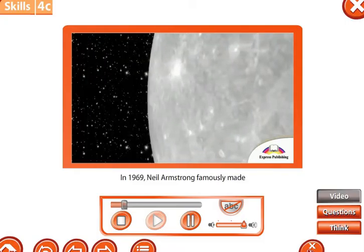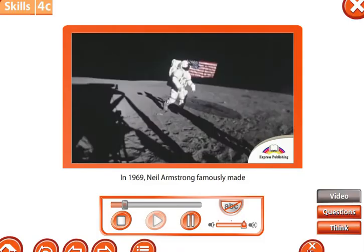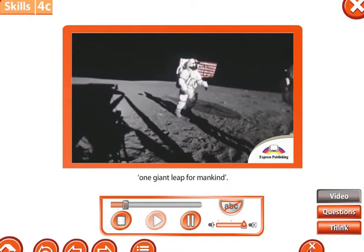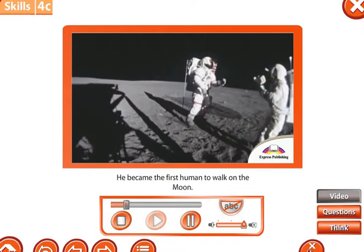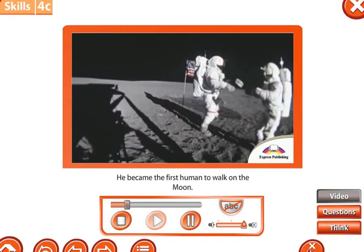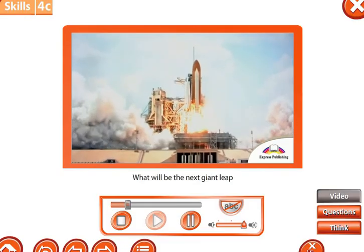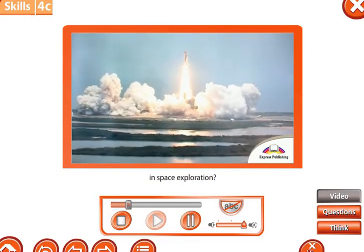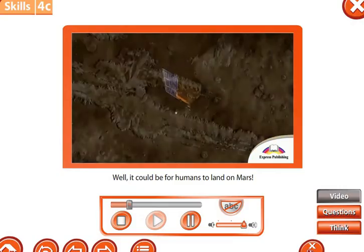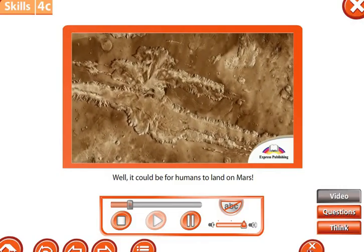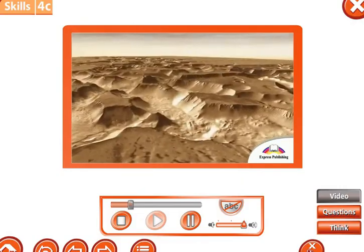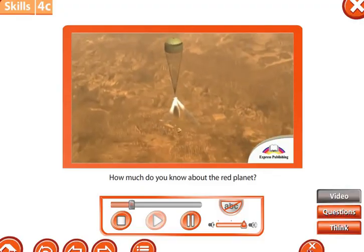This was because its red color reminded them of blood and their own god of war. In 1969, Neil Armstrong famously made one giant leap for mankind. He became the first human to walk on the moon. What will be the next giant leap in space exploration? Well, it could be for humans to land on Mars.